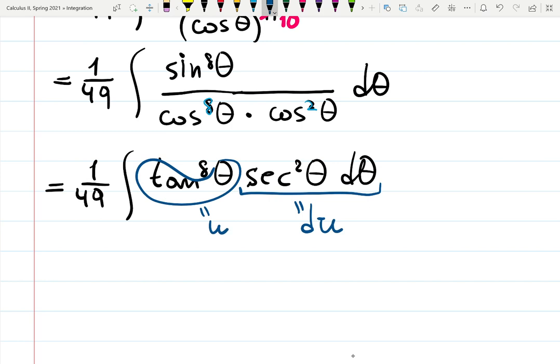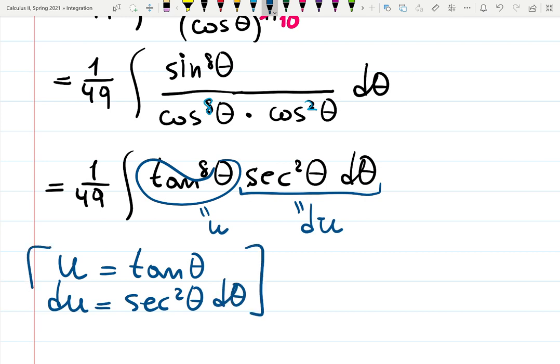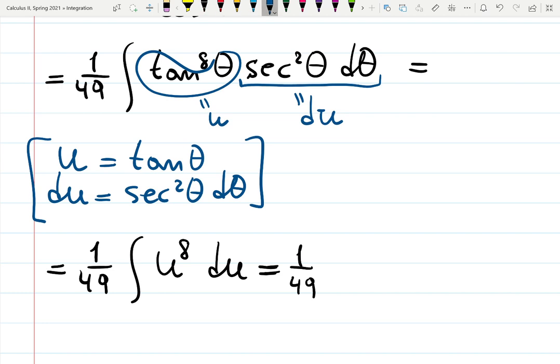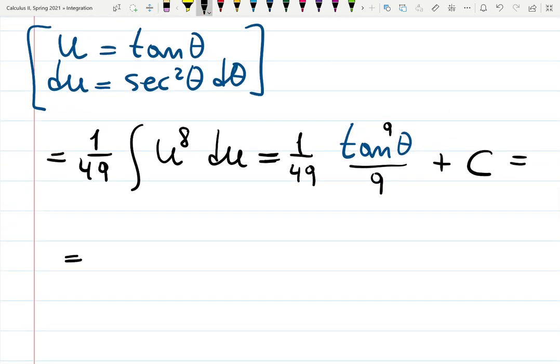So I'm performing u substitution here. u is my tangent theta. Then du will be secant squared theta d theta, because that's a derivative of tangent. And it's exactly a perfect tail of that integral. So finally it's going to be 1 over 49 integral u to the 8 du, which is 1 over 49, u to the 9 over 9. But immediately go back to tangent notation: tangent theta to the 9 over 9, plus c. And that can be simplified into 1 over 441 tangent to the 9 theta plus c.